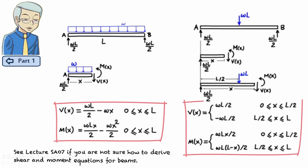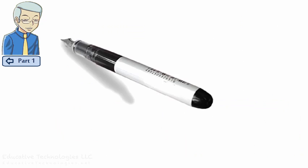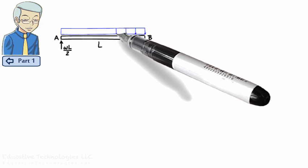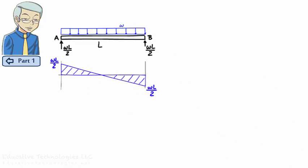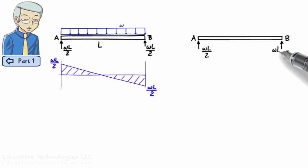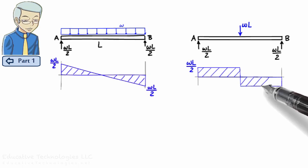Note that the two sets of equations are not the same. The difference becomes even more obvious if we graph the equations. Here is the shear diagram for the left beam, and here is the shear diagram for the right beam. Clearly, the two diagrams are not identical.